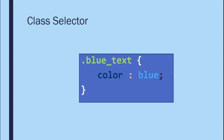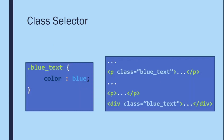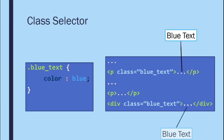The class selector is defined using a dot before the class name. It can be applied to different kinds of elements. For example, a paragraph with class 'blue-text' and a div with class 'blue-text' will both have blue text, while elements without that class are unaffected.